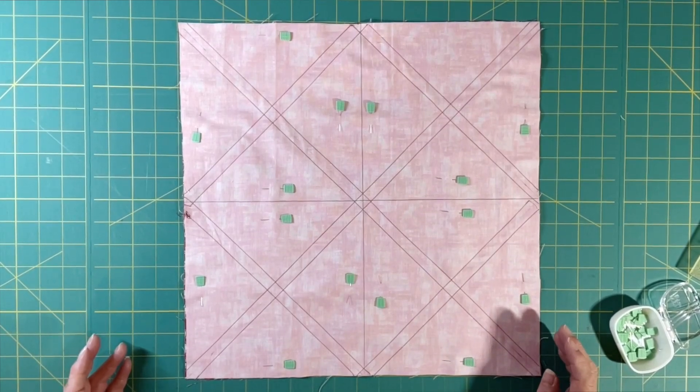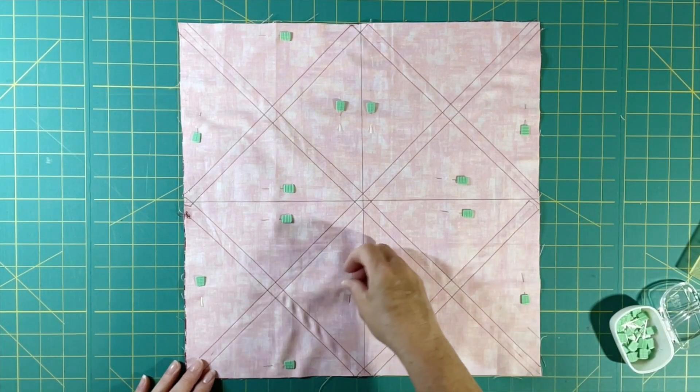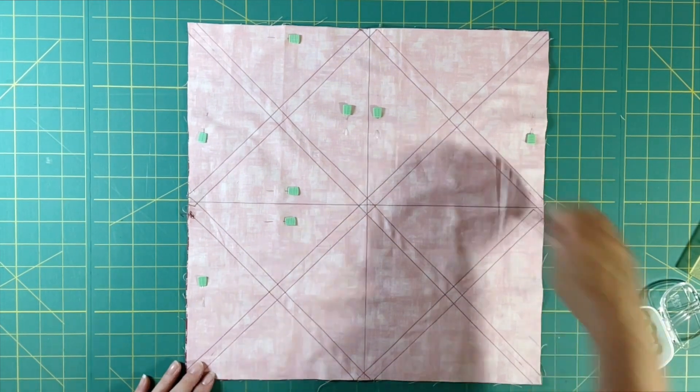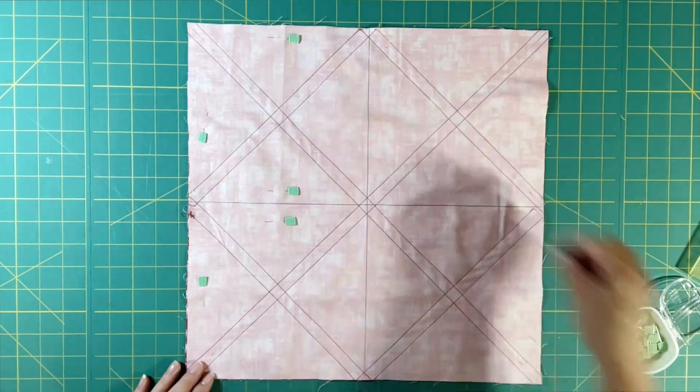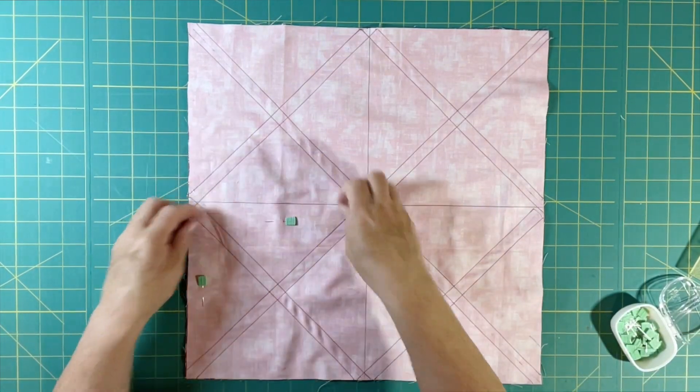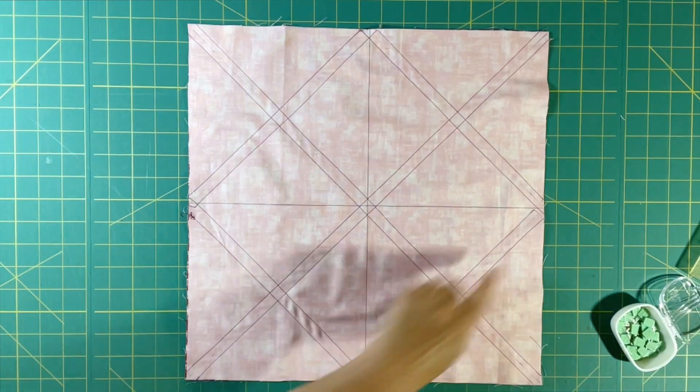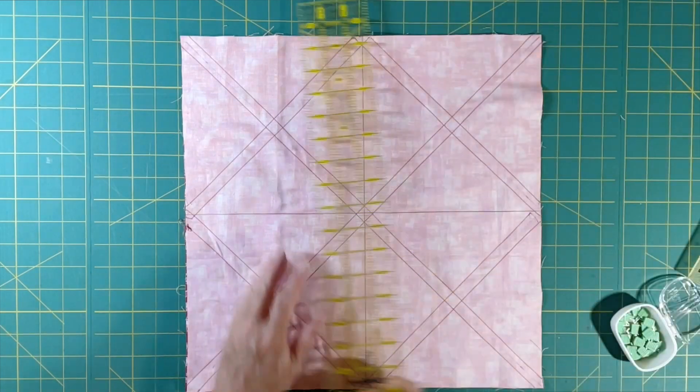This is our grid for our 32 at once half square triangles. I'm going to take these pins out now and the first step after this will be to cut on these two lines that we did in pencil. So I'm going to go ahead and do that.